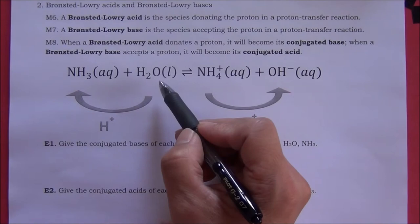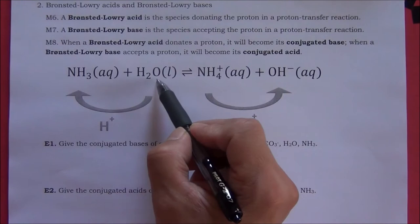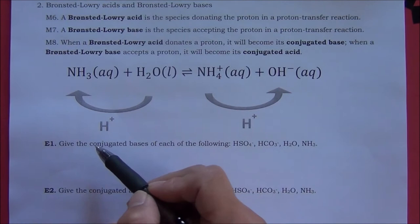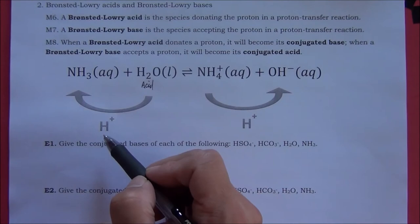Ammonia reacts with water to produce ammonium ion and hydroxide ion. For the forward reaction, water will donate a proton and ammonia will accept a proton. From the definition, water is considered a Brønsted-Lowry acid and ammonia is a Brønsted-Lowry base.